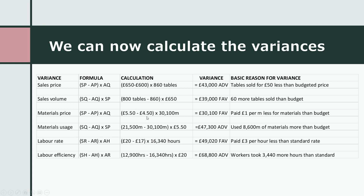For materials price variance: standard price £5.50 minus actual price £4.50 = £1 less per metre, times the 30,100 actual metres used, gives a favourable variance. We saved £1 per metre on materials. The usage variance was adverse: standard quantity for 860 tables was 21,500 metres but we actually used 30,100 metres, times the standard price of £5.50, gives an adverse variance of £47,300 — because we used 8,600 metres more than budgeted.